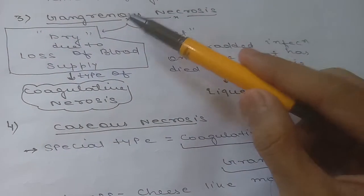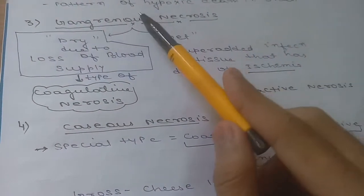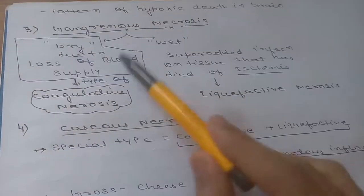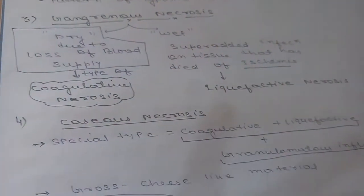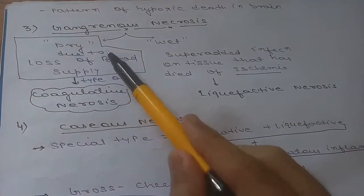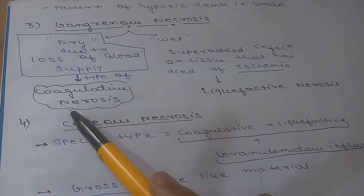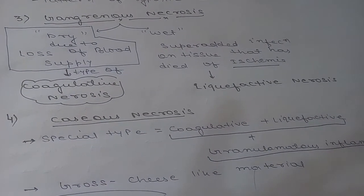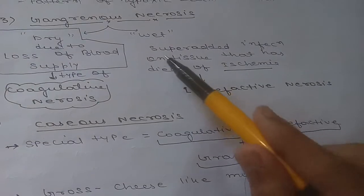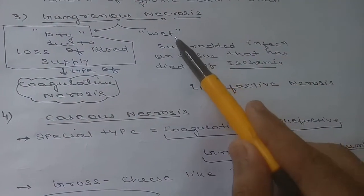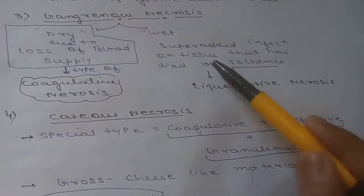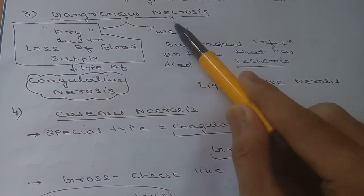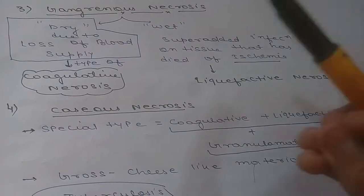Next is gangrenous necrosis, divided into dry and wet types. Dry gangrenous necrosis is due to loss of blood supply and is a type of coagulative necrosis, as it is related to ischemia. Wet gangrenous necrosis is generally seen with superadded infections on tissues that have died of ischemia, and is an example of liquefactive necrosis.